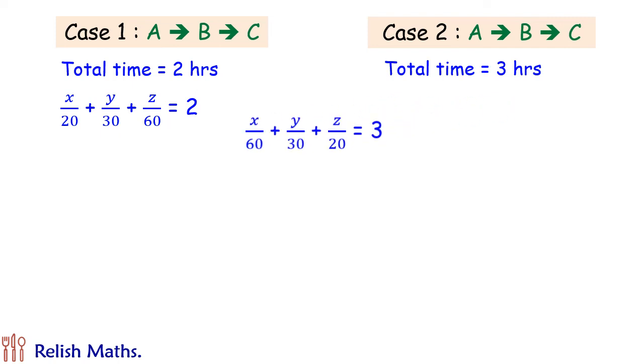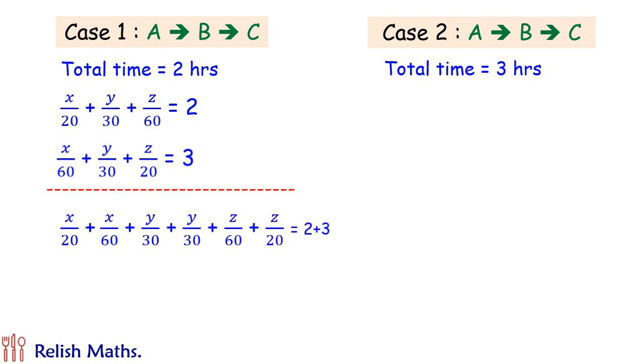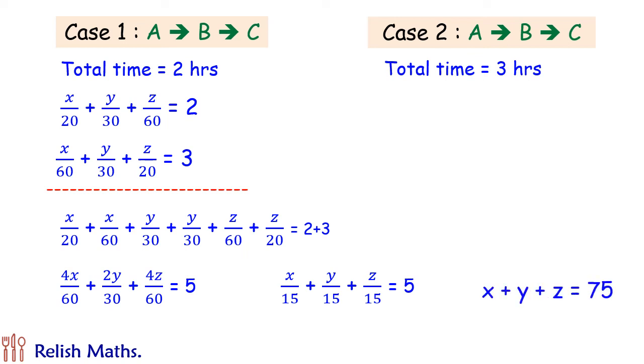Let's add the equations. So on adding we will get our value as this. Let's simplify it. Now in this, 15 is becoming the LCM, and we will get X plus Y plus Z equals 75, and that's our answer. The capacity of tank is 75 liters.